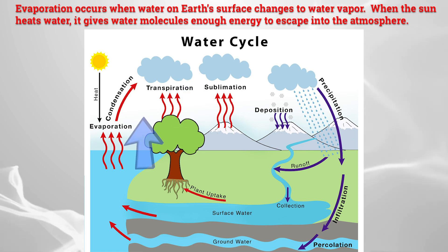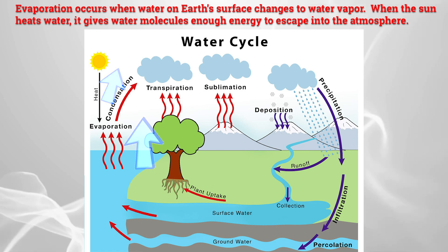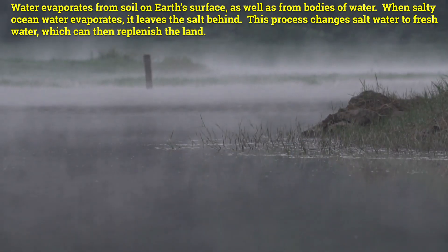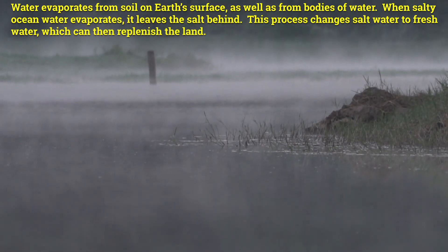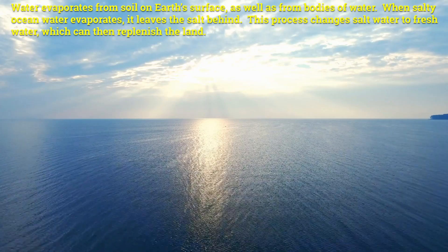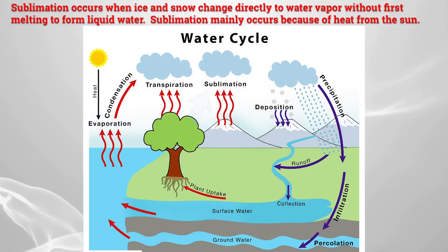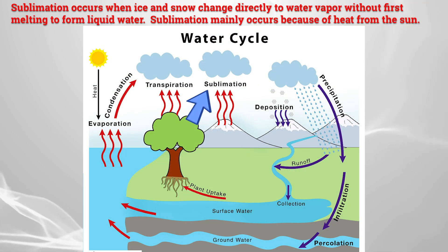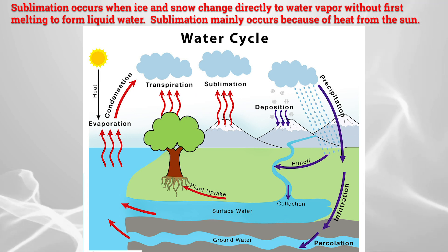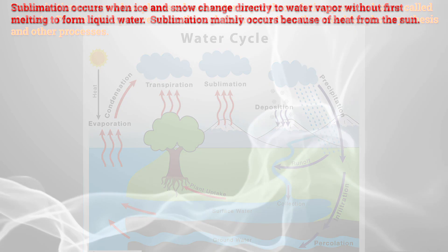Evaporation occurs when water on Earth's surface changes to water vapor. When the sun heats water, it gives water molecules enough energy to escape into the atmosphere. Water evaporates from soil on Earth's surface as well as from bodies of water. As salty ocean water evaporates, it leaves salt behind. Sublimation occurs when ice or snow change directly to water vapor without first melting to form liquid water. Sublimation also occurs because of heat from the sun.